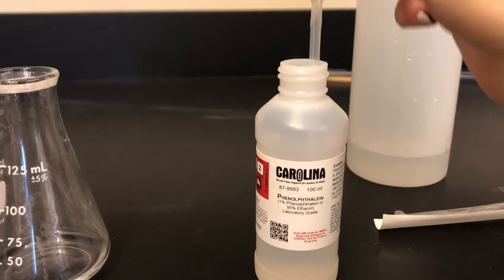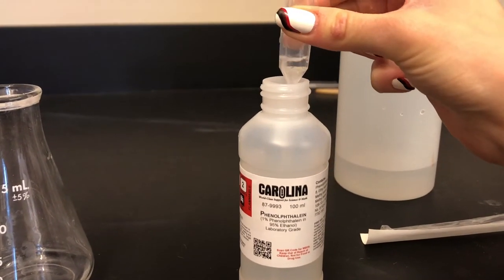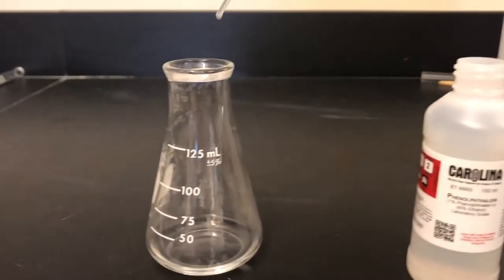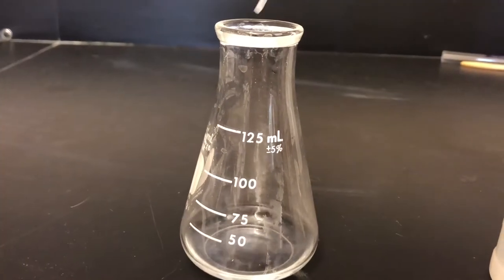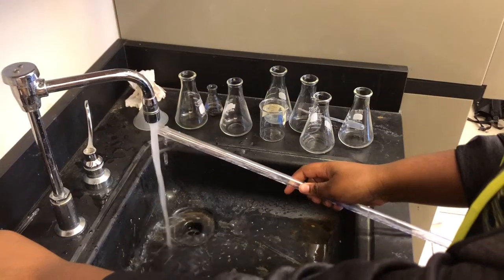The next step is to get the pipette and put 5-6 drops of phenolphthalein into the flask with acid in it. Make sure that your drops aren't large squirts. Also be careful that the drops go right into the acid and not on the side of the flask.